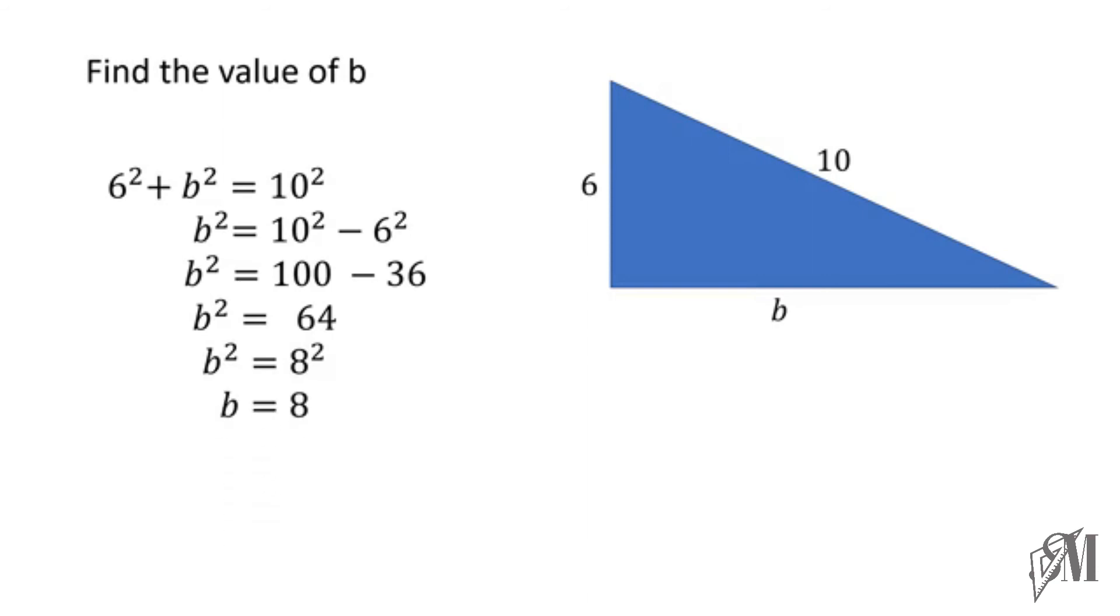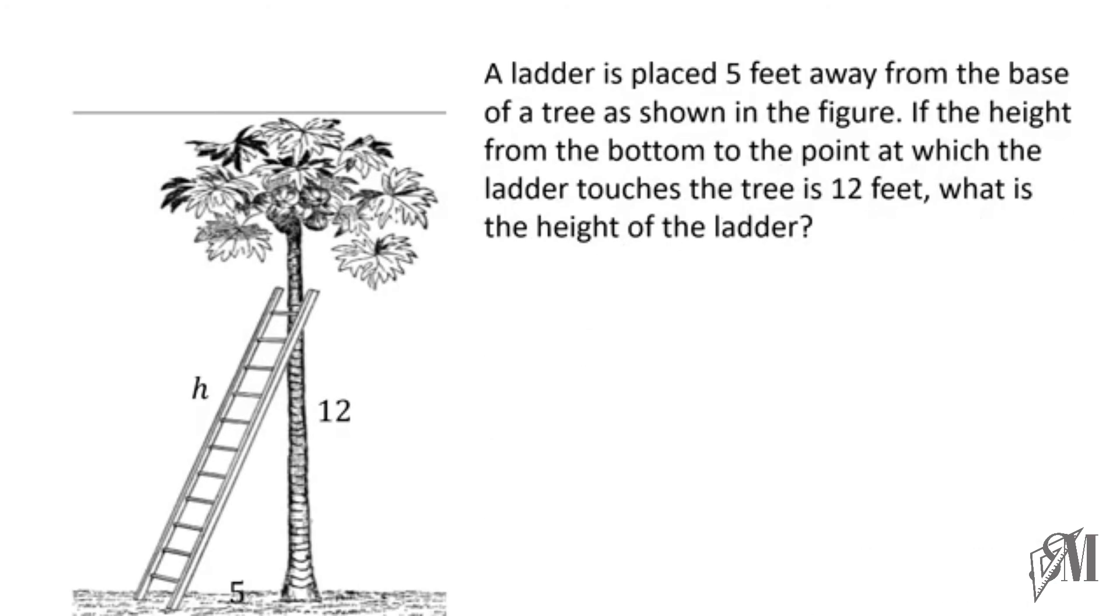Moving on to another example: a ladder is placed 5 feet away from the base of a tree. If the height from the bottom to the point where the ladder touches the tree is 12 feet, what is the length of the ladder? Here too we can apply the Pythagoras theorem, because the tree and the ground are perpendicular to one another. The triangle formed is a right-angled triangle.